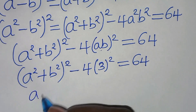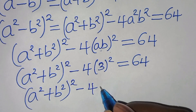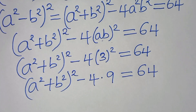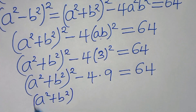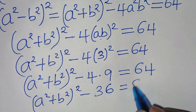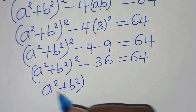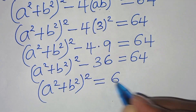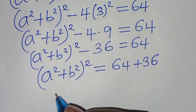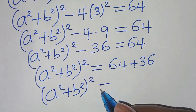This gives us a squared plus b squared, raised to power 2, minus 9 times 4, which is 36, equals 64. So a squared plus b squared, raised to power 2, equals 64 plus 36, which equals 100.